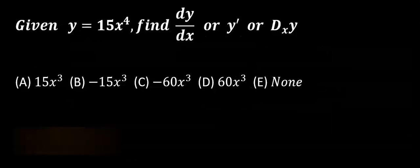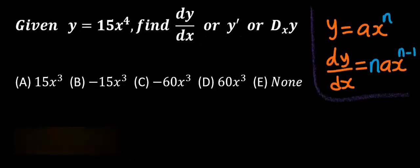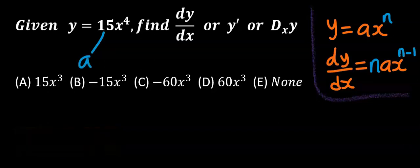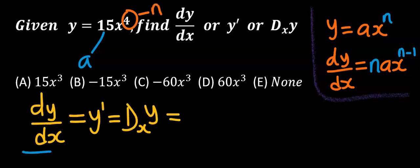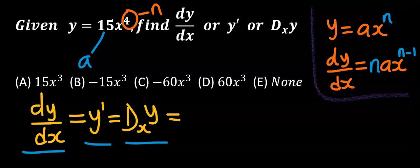Let's consider this question. In this question, our a is 15 and our n is 4. Then our dy/dx, which is the same thing as y prime, which is the same thing as D_xy.